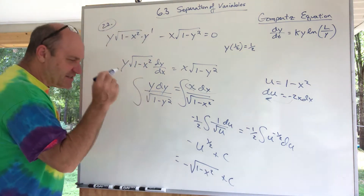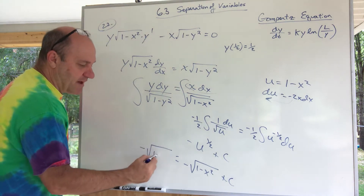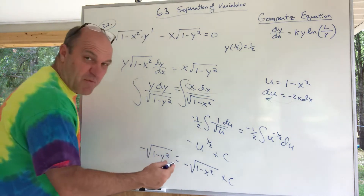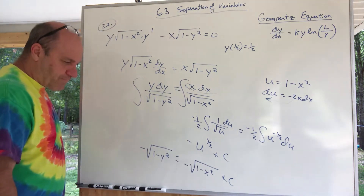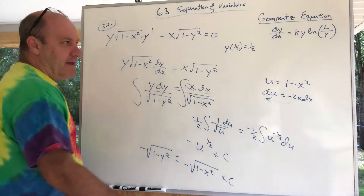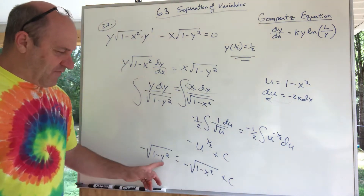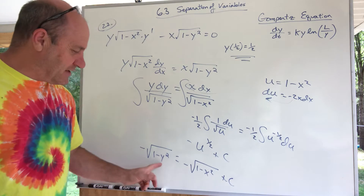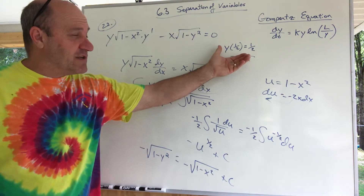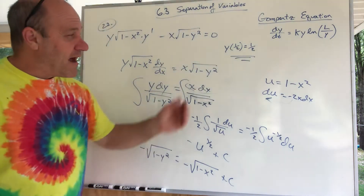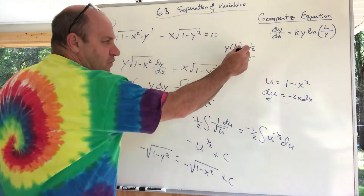Since the y-side is the same integral, the answer is negative square root of (1 minus y squared). We don't put a plus C on that side; we lump it together on one side. So we have: negative square root of (1 minus y squared) equals negative square root of (1 minus x squared) plus C. Now I can plug in the initial condition to find C. I could solve for y first, but that doesn't look fun, so I'll plug in the initial condition right now with x = 1/2 and y = 1/2.